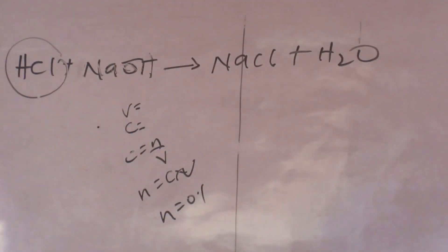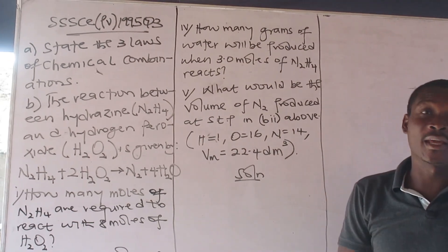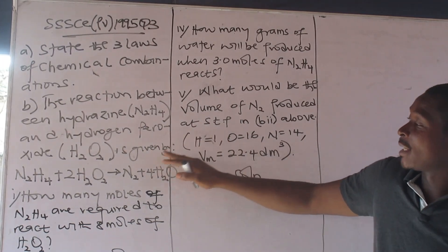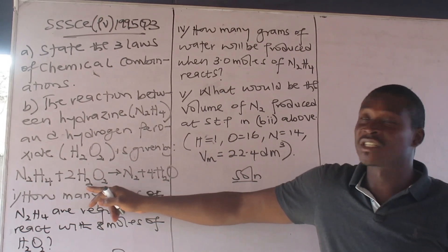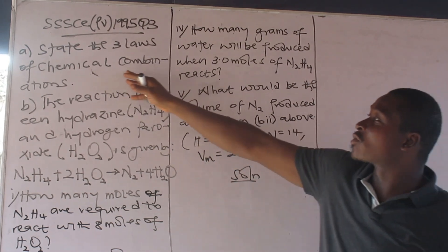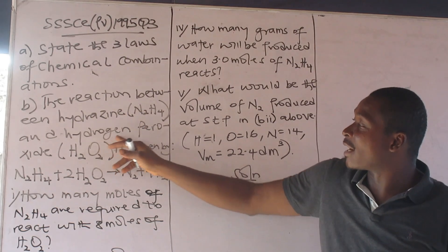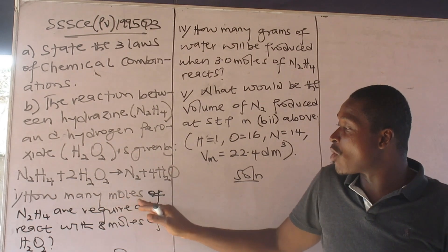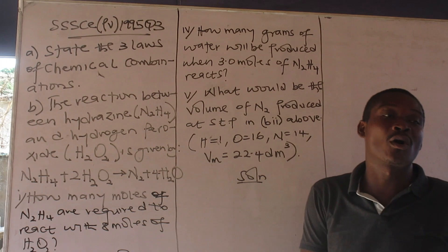Now let's see how to apply mole ratio in doing this work. The equation for the reaction has been given; in some cases we have to write and balance our own equation. Study the three laws of chemical combinations — refer to your notes. The reaction between hydrazine (N2H4) and hydrogen peroxide (H2O2) is given and it is balanced. How many moles of hydrazine are required to react with 8 moles of hydrogen peroxide?